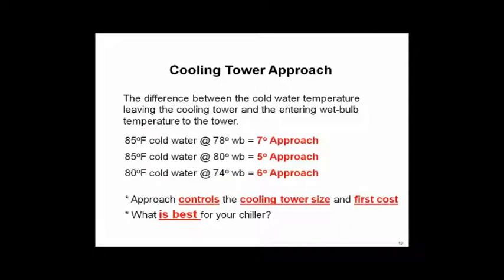How about the cooling tower approach? We said 85-degree water with 78-degree wet bulb is a 7-degree approach. What's wrong with a 5-degree approach — making 83-degree water with 78-degree wet bulb? Nothing — it works. But the cooling tower will be bigger. The closer the approach, the bigger the tower, and that's a direct control of first cost. Whatever is best for your application is the key.